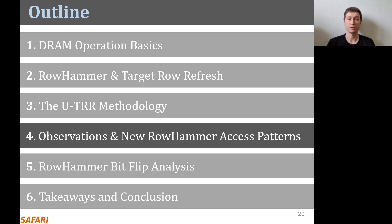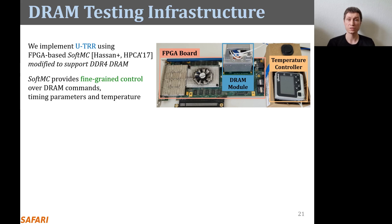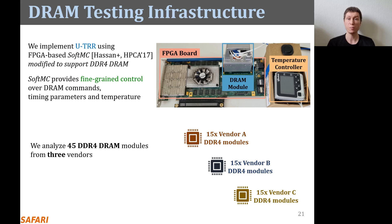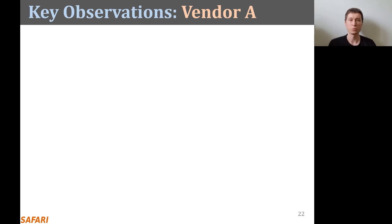I will now describe the observations we made by analyzing existing TRR mechanisms using UTRR and explain the new RowHammer access patterns we crafted. To implement UTRR and conduct the DRAM experiments, we used SOFTMC, an FPGA-based DRAM testing infrastructure, which we modified to support DDR4 modules. We used SOFTMC because it provides fine-grained control over DRAM commands, timing parameters, and temperature. In our study, we analyzed 15 DDR4 DRAM modules from each of the three major DRAM vendors. The paper has a table providing detailed information about the tested modules.